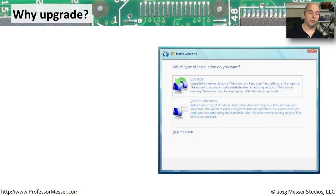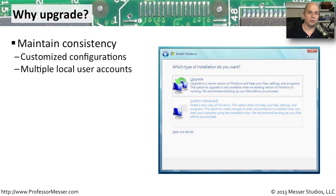Let's say that you've been using your Windows operating system for a while, and now your Windows operating system has an upgrade available. Maybe you'd like to move from Windows XP to Windows Vista or Windows Vista to Windows 7, and you'd like to use some of those new features available in the new version. It's a perfect reason to upgrade your system, and by upgrading the operating system from one version to another, you have some advantages associated with that.